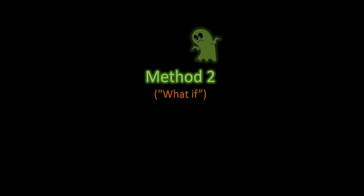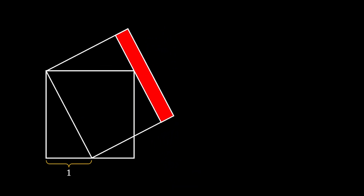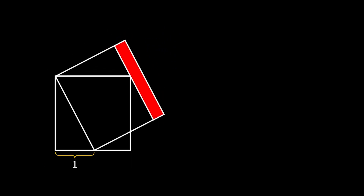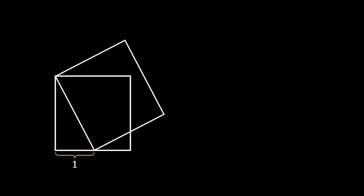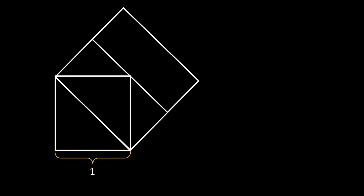Now let's try a different approach: Method 2, called the 'What If' method. In this method, we first shrink our sketch for better understanding. Since the bottom left corner of our big square is an arbitrary point, we can imagine it located at the bottom right corner of our smaller square. Constructing the same parallel line through the upper right corner of the small square gives us our new red rectangle.